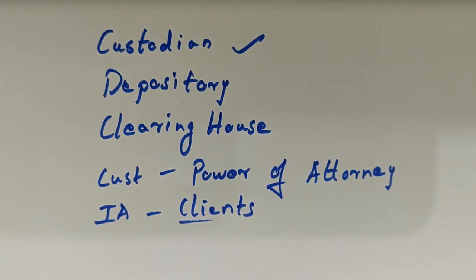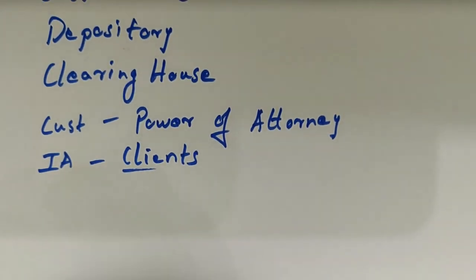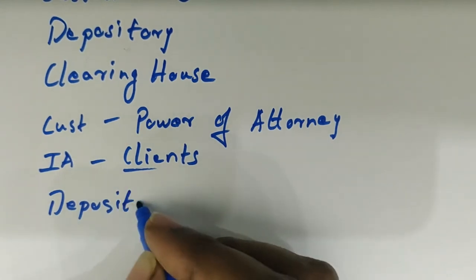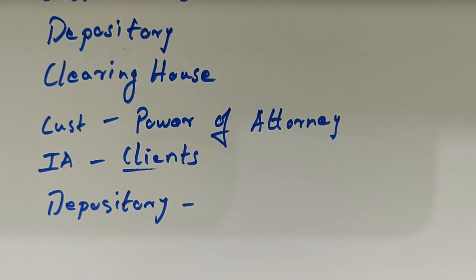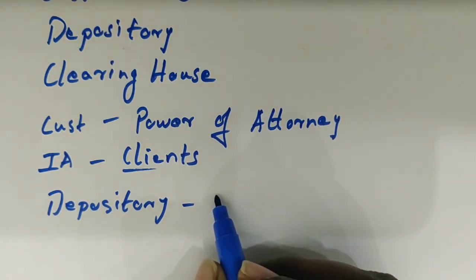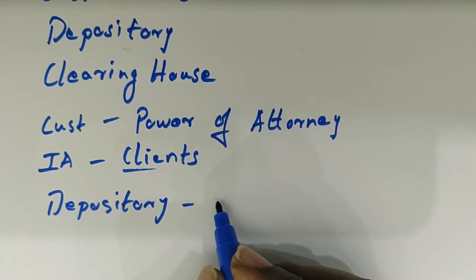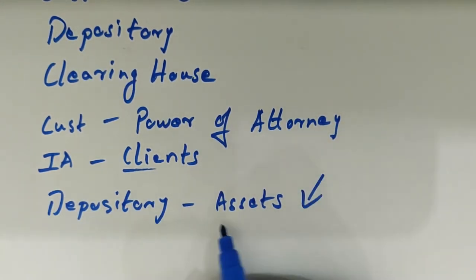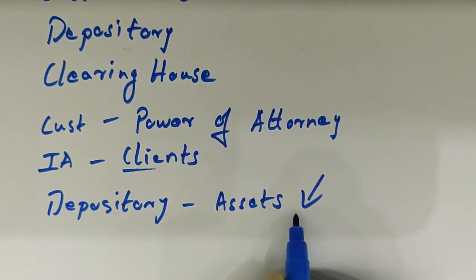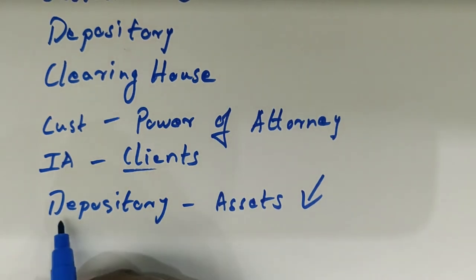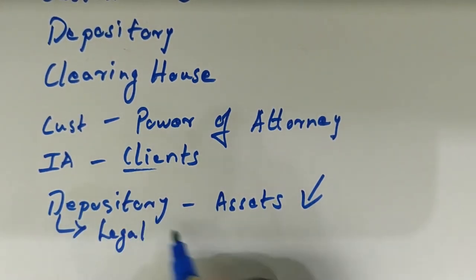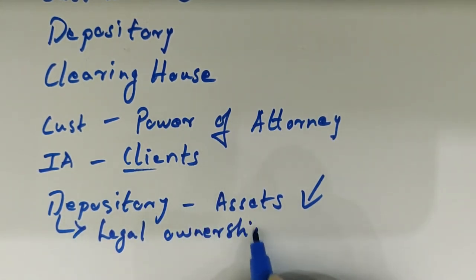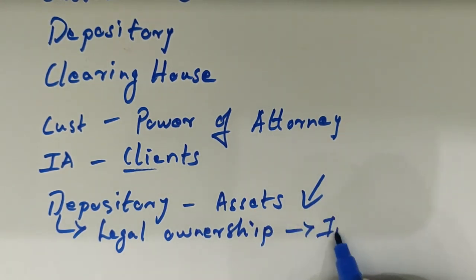Next comes the depository. A depository is also a financial institution, but how it differs from a custodian is that it is a place or financial institution or bank where both major and minor participants' stocks or assets are handled. Once the holder deposits their assets, stocks, cash, or whatever property they hold, they get legal ownership for that, so the depository can straight away deal with investing them further.